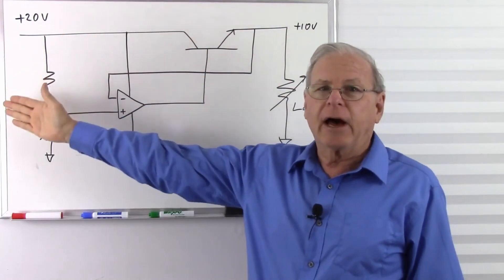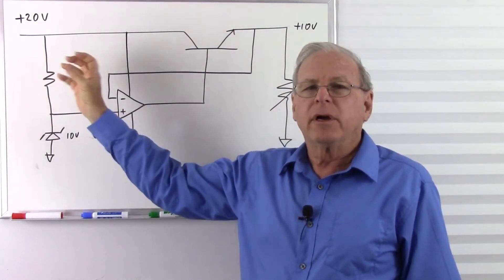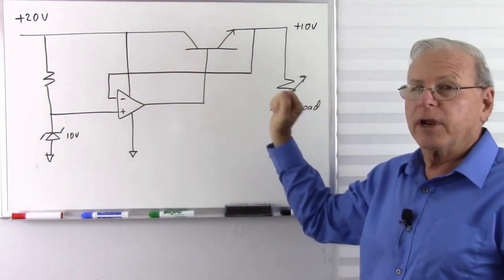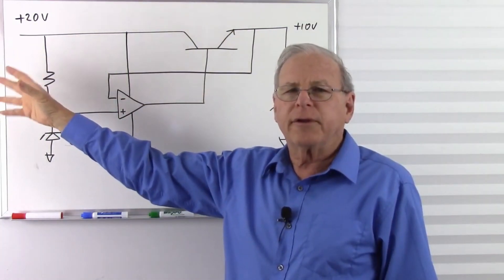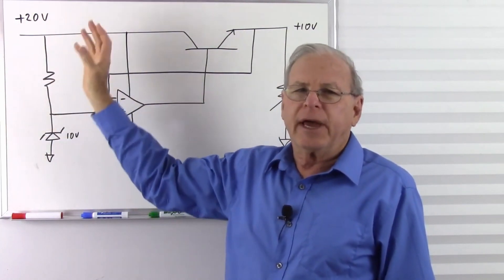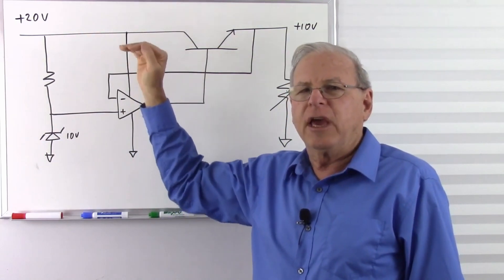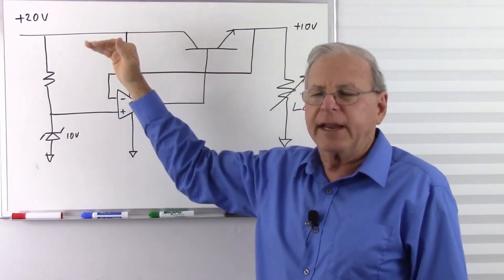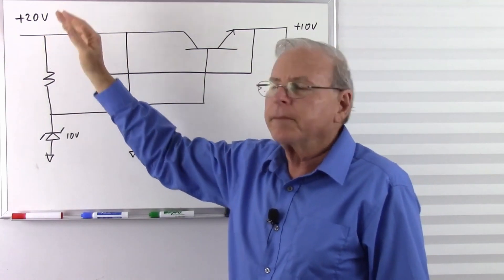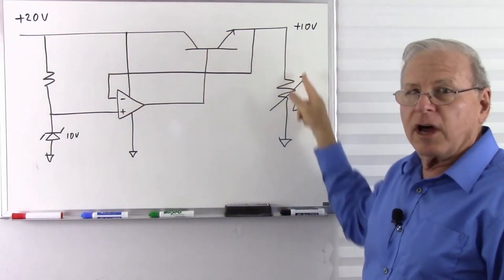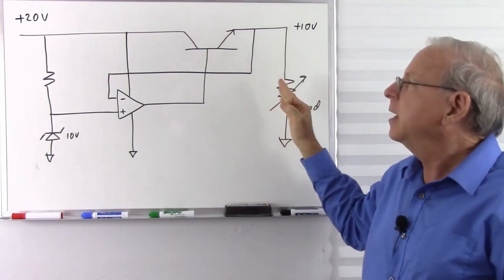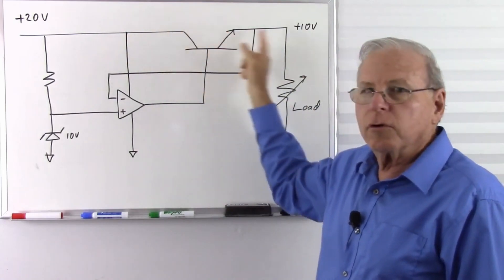I've left the part of the circuit out that has the transformer, the rectifier, and the filter because we're going to look at the regulator. There is a transformer that steps the voltage down from the mains to a more reasonable voltage. Then we have the rectifier which turns this into pulsating DC, and then a filter that filters that out to a flat DC. In this particular circuit, we end up with about 20 volts. We want 10 volts across our load, so we have about a 10-volt overhead to work with.